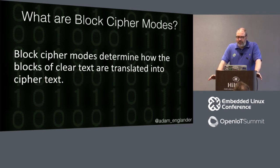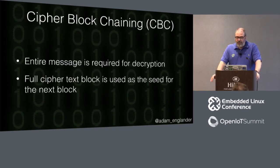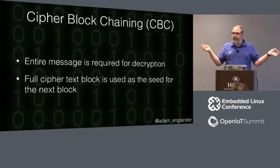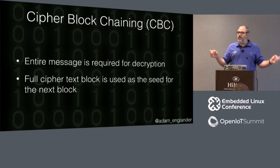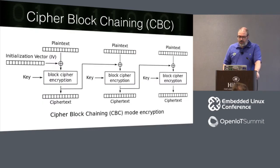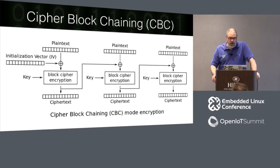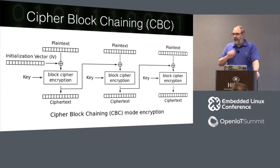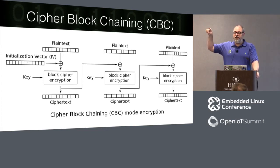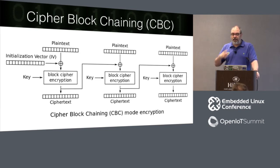Block cipher modes determine how blocks of plaintext are translated into ciphertext. Use CBC — Cipher Block Chaining — because the entire message is required for decryption: you cannot decrypt the last piece without the first piece. Here's how it works: you start with an initialization vector, encrypt the data, and then the initialization vector for the next packet is the encrypted value of the first packet. So every packet is going to be different even if it's the same value, because it uses the encrypted value as a feedback loop for the next one.